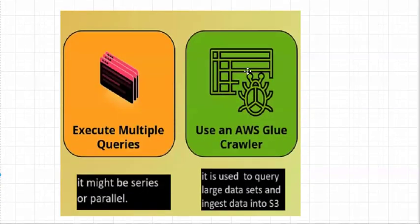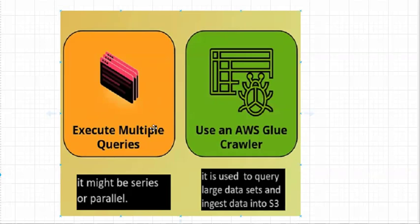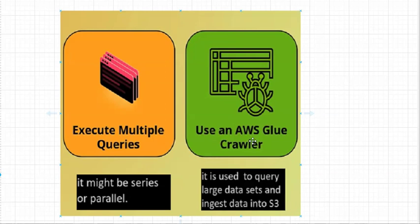Two more important points: you can execute multiple queries — you can execute them serially or even in parallel. Parallel execution is recommended so that you will be charged less since it executes in less time. We also use AWS Glue Explorer, which is used to query large datasets and ingest data into S3.